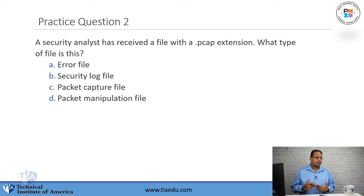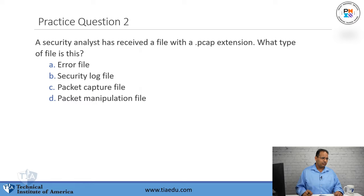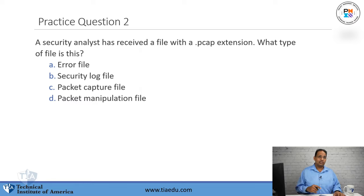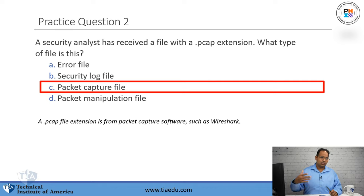Practice question two: A security analyst has received a file with a .pcap extension. What type of file is this? A, error file. B, security log file. C, packet capture file. D, packet manipulation file. The answer is packet capture file. A packet capture file is what you would save in Wireshark. If you remember the course — I showed you how to sniff traffic on Wireshark — when you save that packet capture, it generally has a .pcap extension.